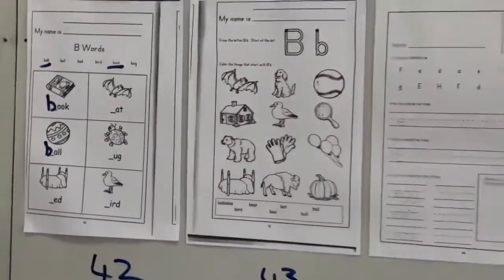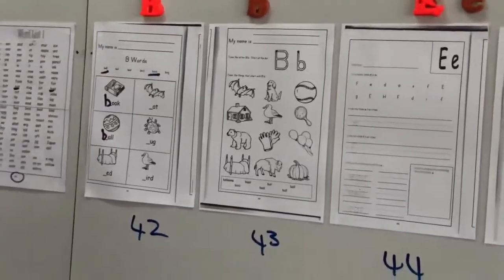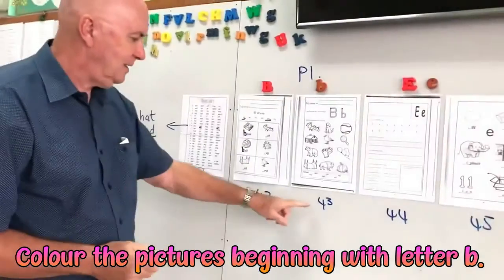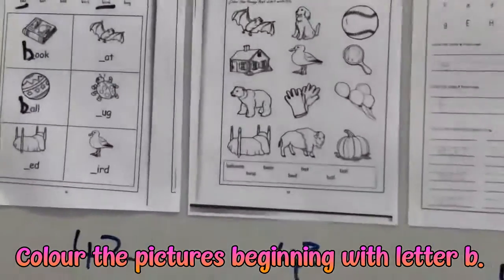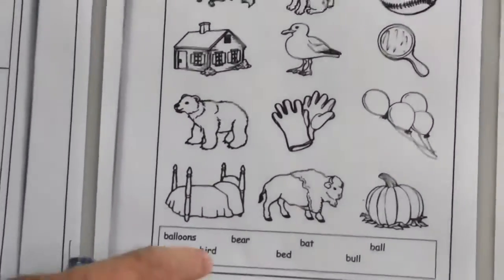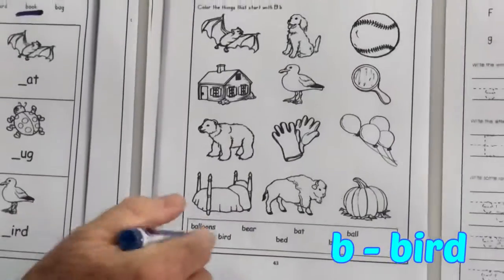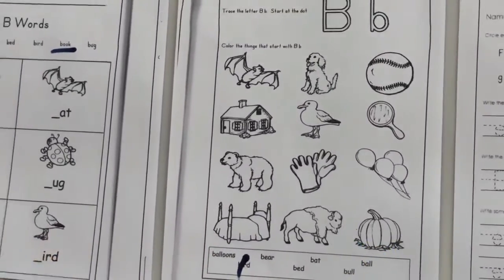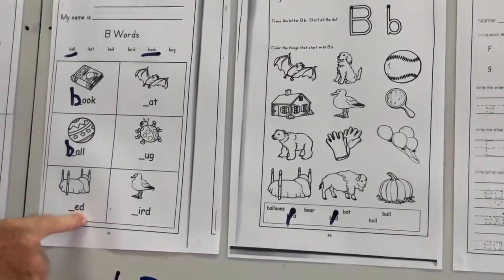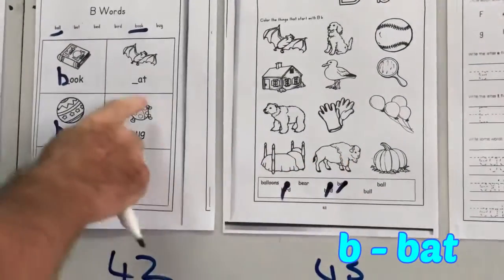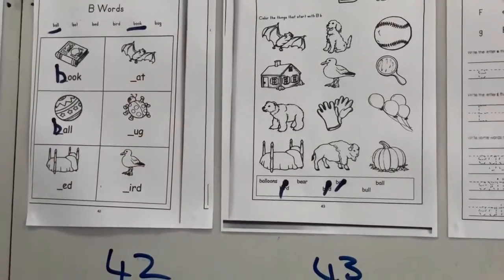And page 43, let's colour the words beginning with letter B. OK, so we know some of them. But, bird is on page 42. But, bed is on page 42. But, bat is also on page 42.